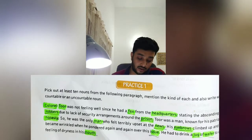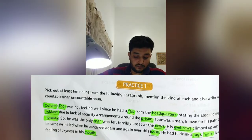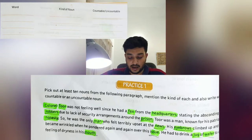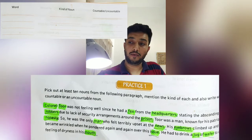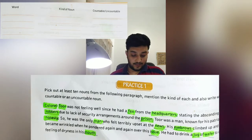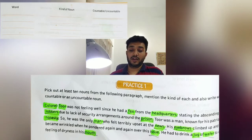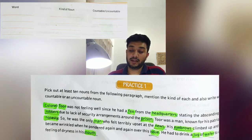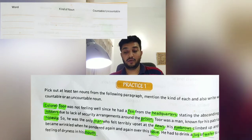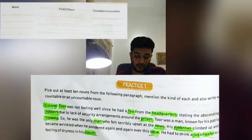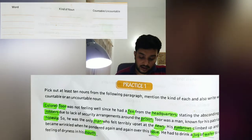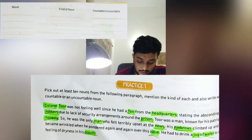Now comes Practice number one: pick out at least ten nouns from the following paragraph, mention the kind of each, and also write whether it is countable or uncountable. On the next page, you write the word, then the kind of noun, then countable or uncountable. Starting from the paragraph — 'Colonel Tur' — Colonel is a noun and Tur is also a name of a person.